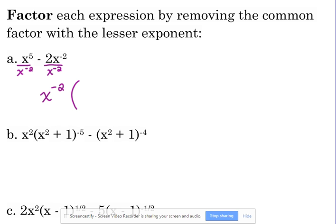What's the rule when you divide with exponents? You subtract. So 5 minus negative 2 is the same as adding 2, so that leaves us with x to the 7th is going to go in our parentheses. Minus 2, because we took out the x to the negative 2.